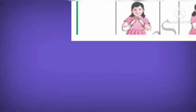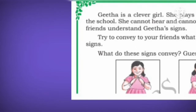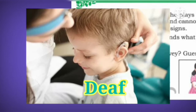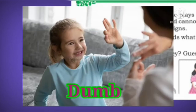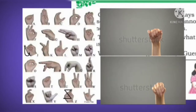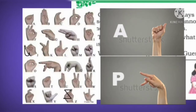We also come across people who are deaf and dumb. Deaf means they cannot hear and dumb means they cannot speak. Then how do they communicate? They communicate by using signs. Signs are nothing but hand and body gestures to express thoughts and ideas.